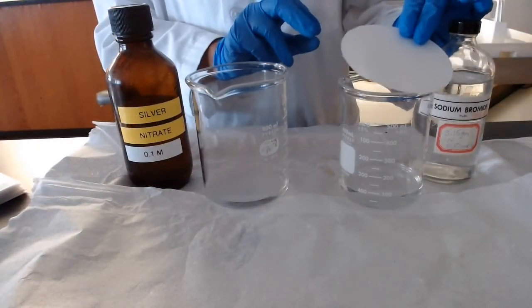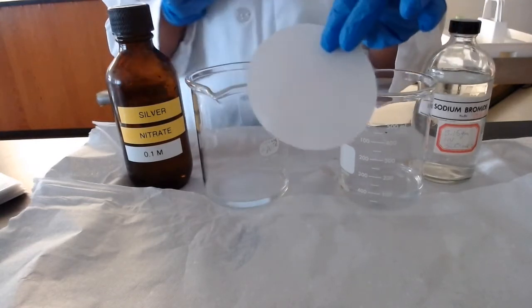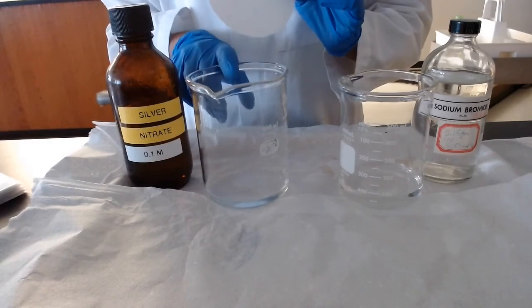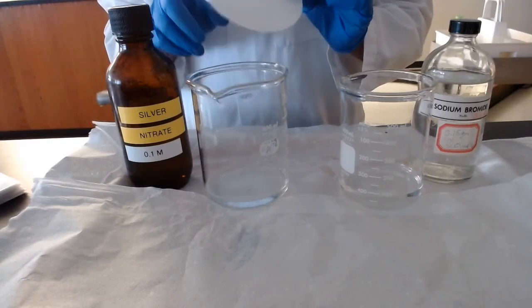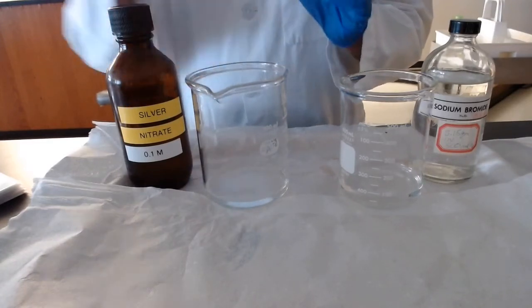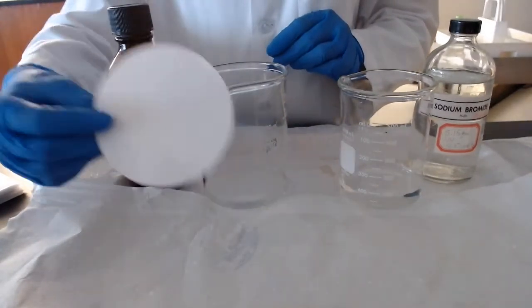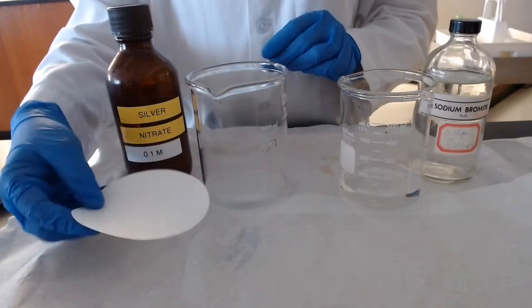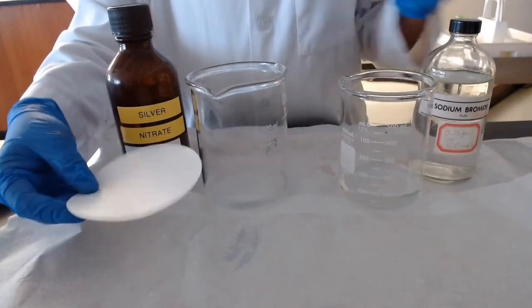Then I need to allow this to dry fully before placing it into the silver nitrate beaker. At that time, this filter paper will become light-sensitive. So I would need to place this in a dark area for 20 minutes to dry, and then we will continue.